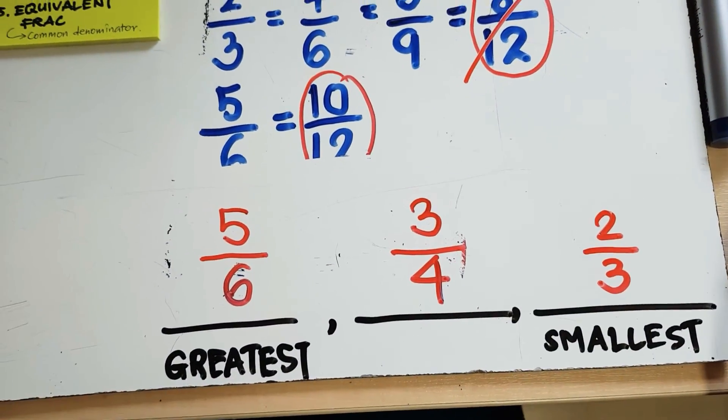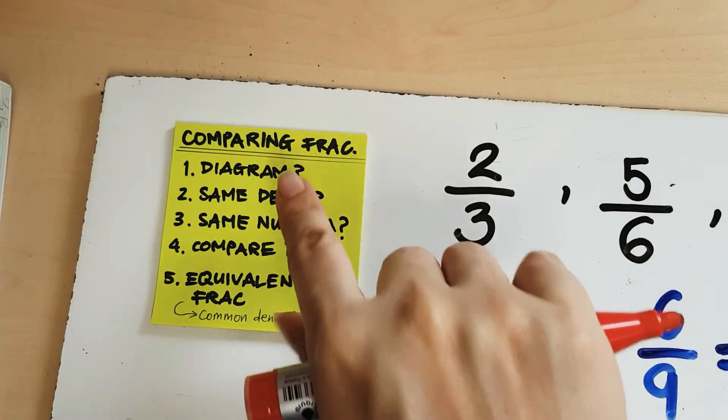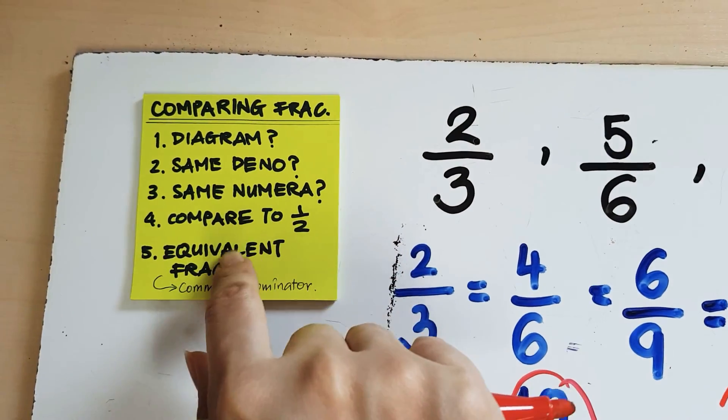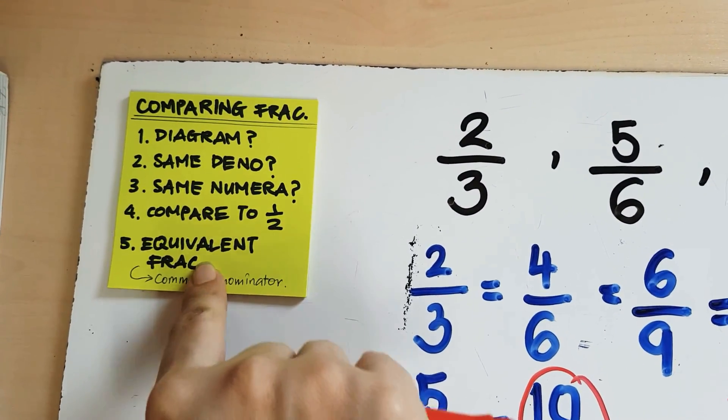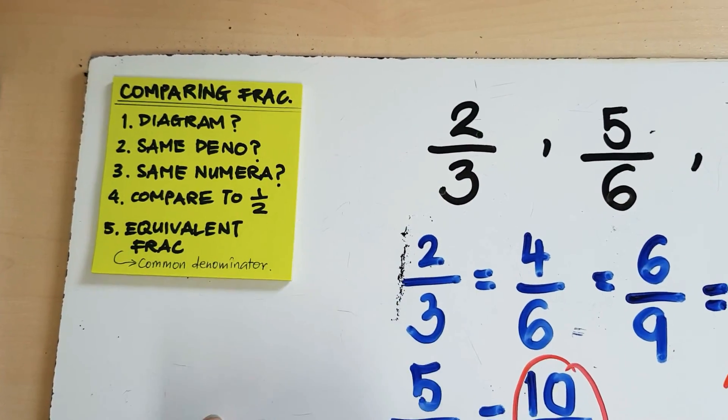And that is how we order fractions. It is important to go down the list each time you are comparing. Yes, if there is a more systematic way of reminding yourself instead of just jumping all over the place.